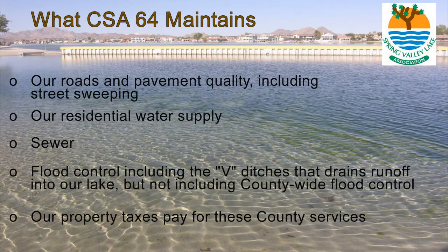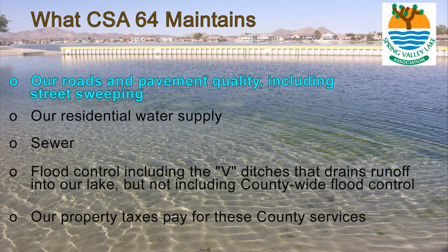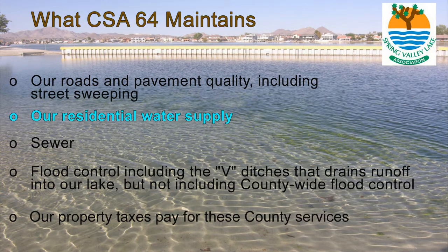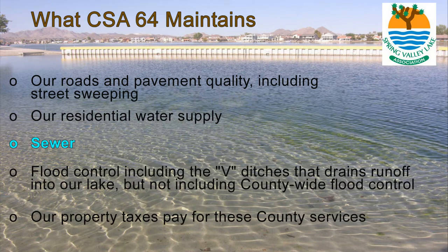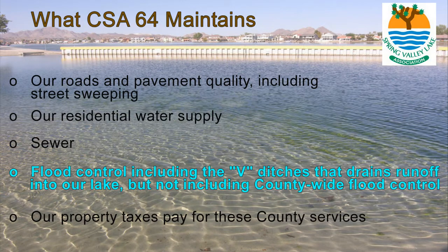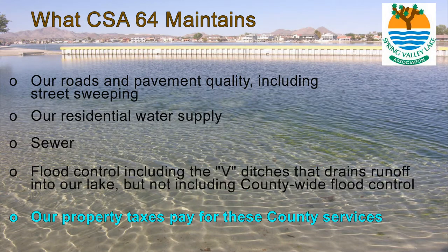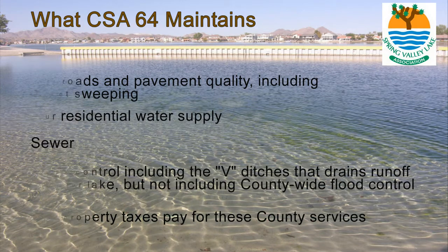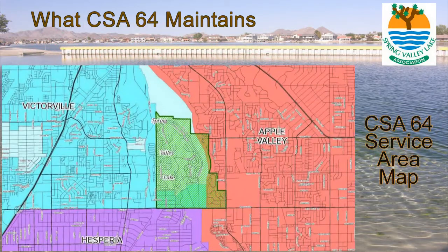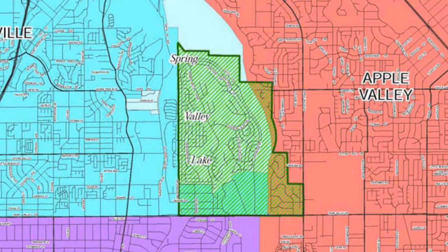CSA-64 provides several services to the lake side. This includes our roads and pavement maintenance and street sweeping. Our residential water supply comes from wells maintained by CSA-64. Our sewer is also maintained by them and is connected to the Victor Valley Wastewater Facility near Oro Grande. Although they clean out our drains and V-ditches that empty into our lake, another county department manages the flood control along the Mojave River. The property taxes that we pay to the county are used to fund and pay for all of these services. This map shows our little county-funded island — notice the portions that overlap into Apple Valley.